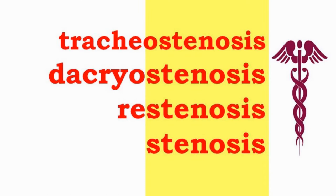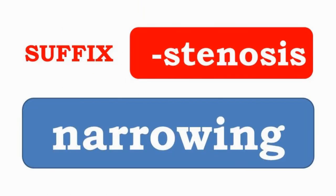Tracheostenosis, and restenosis, and stenosis have the suffix -stenosis, which indicates an abnormal narrowing in a blood vessel or other tubular organ or structure.